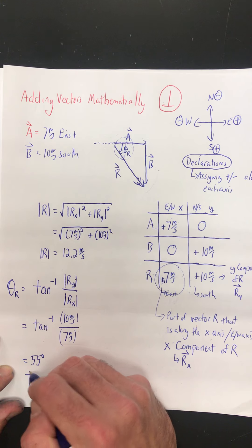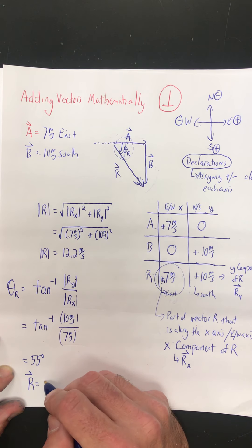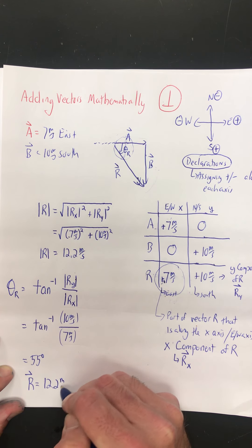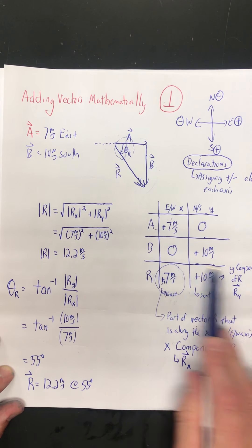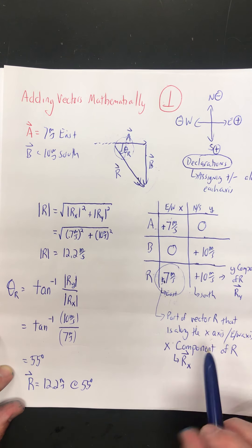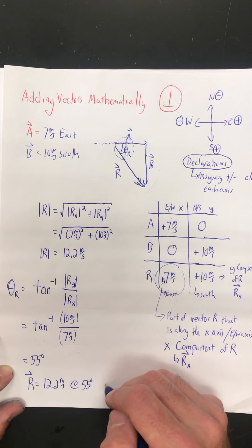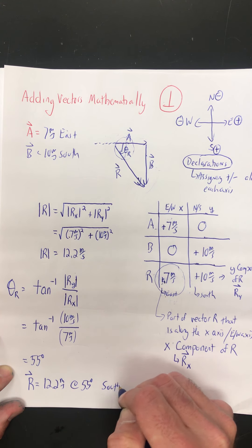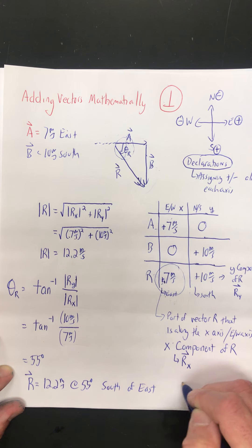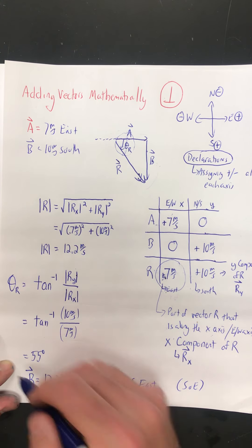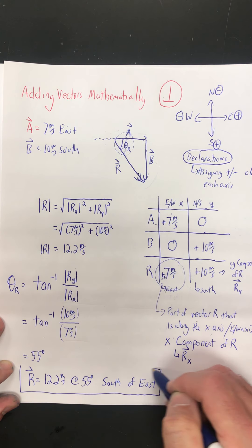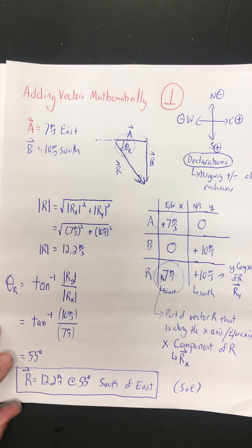So let's finish it off. Vector R is 12.2 meters per second at 55 degrees south of east. That is the mathematical process for adding perpendicular vectors.